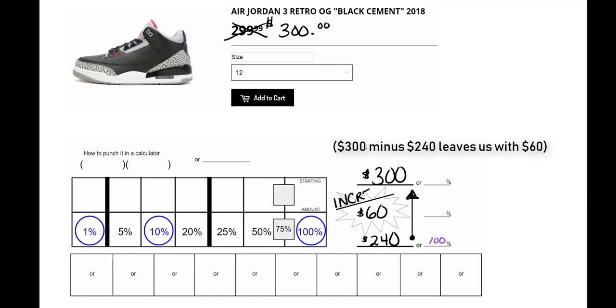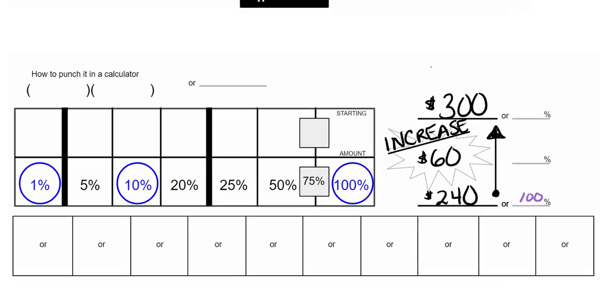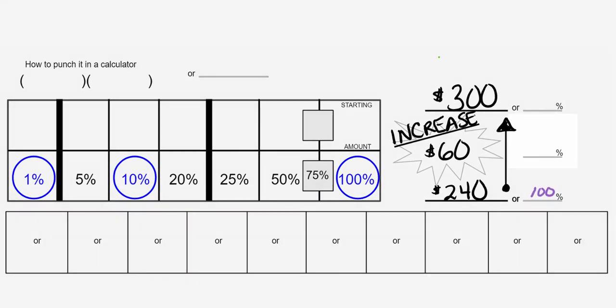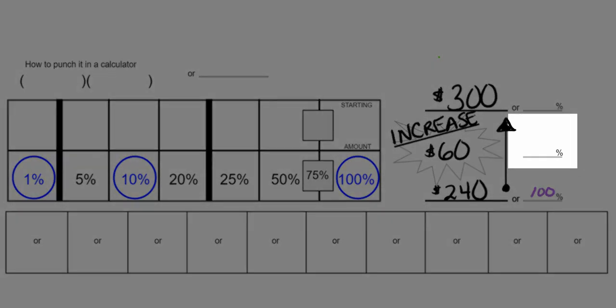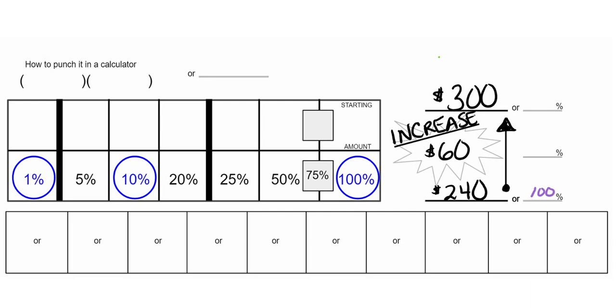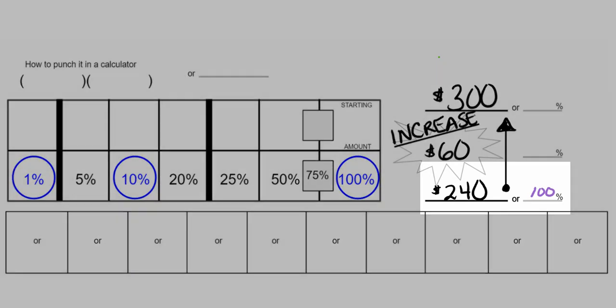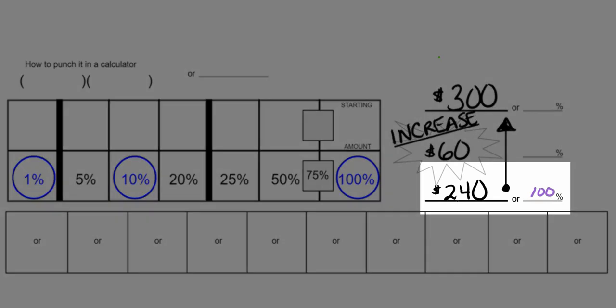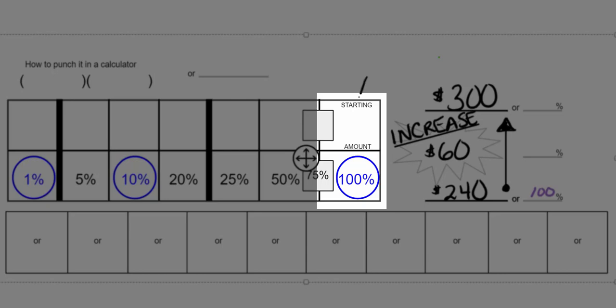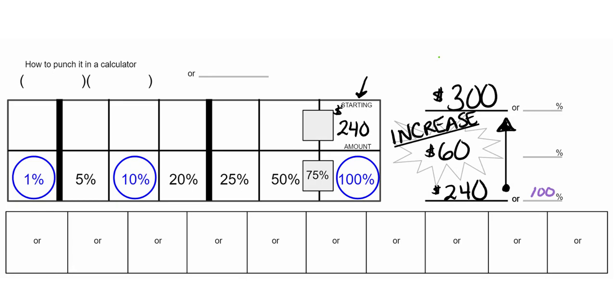It's an increase in the price. So I usually write increase. But we're increasing our price by $60. What percent are we making on our money? That's what we want to find. So whatever our 100% is, the dollar amount that we have, that's going to go here in our starting amount.